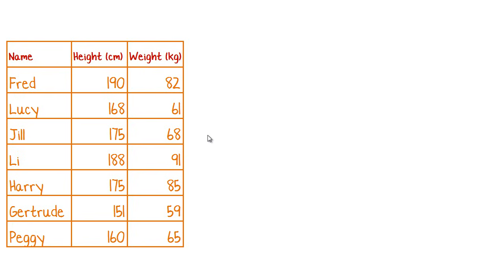Here we have a table of data with two numerical variables: height and weight. We also have something categorical — the name of the person — but we don't need to graph that. We're just going to take these numerical values and graph them. The first thing we need to do is figure out which is the dependent and which is the independent variable, because your dependent variable will always go on the vertical axis and your independent on the horizontal. Weight depends on how tall you are, so weight will be on the vertical axis.